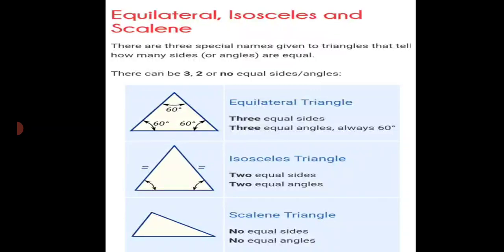Equilateral, isosceles, and scalene — we have studied about these three triangles. There are three special names given to triangles that tell how many sides and angles are equal. There can be three, two, or no equal sides and angles. Equilateral triangles have three equal sides, three equal angles, and always a sixty-degree angle.